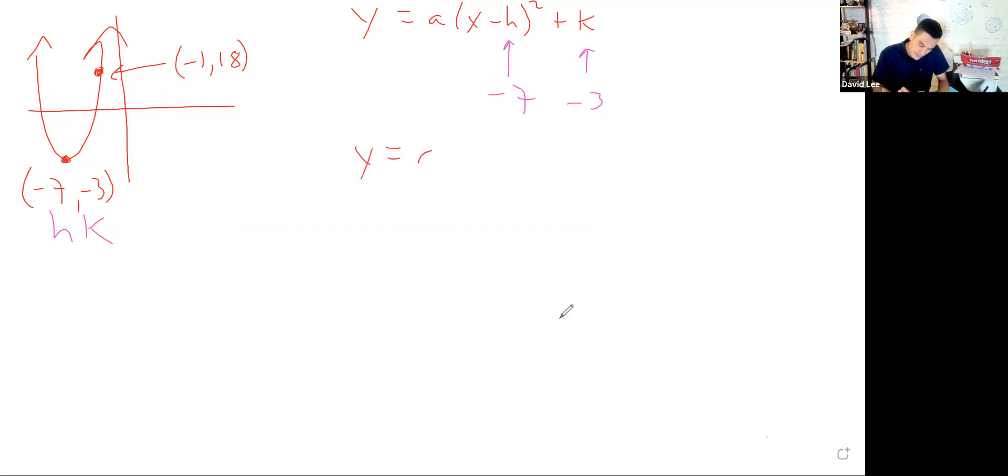So this gives us y = a times... The double negative turns it into a positive. Now we've plugged in h and k. Now use the random point and plug in those coordinates for x and y, and that'll give us the ability to solve for this coefficient a. So we would get 18 here, and then x is negative 1. Let me add 3 to this side. In the parentheses, that's 6 squared.